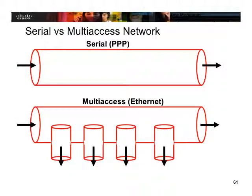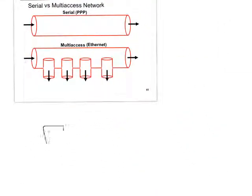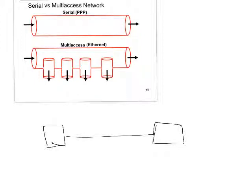For physical addresses, we have two common types of communication. First, we can have two devices connected point-to-point — a physical connection using a wire that connects only two nodes. This is like a pipe: if you send anything from one side, there is no other way for it to go except straight to the other side.